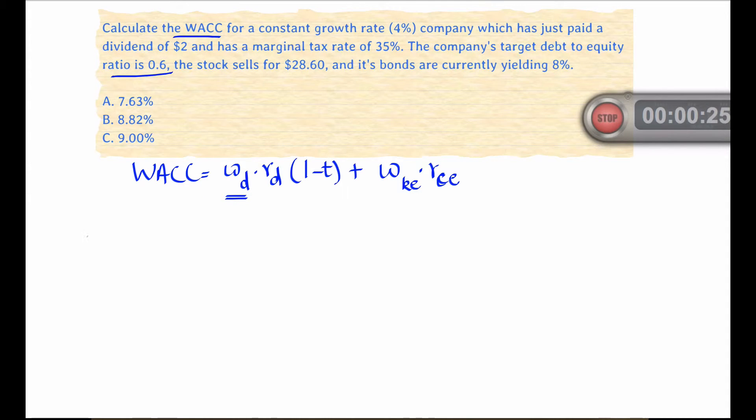We're given a debt to equity ratio. This is the first point at which you could stumble in this problem because it's very tempting to use 0.6 as WD and 0.4 as WKE. That would be incorrect.